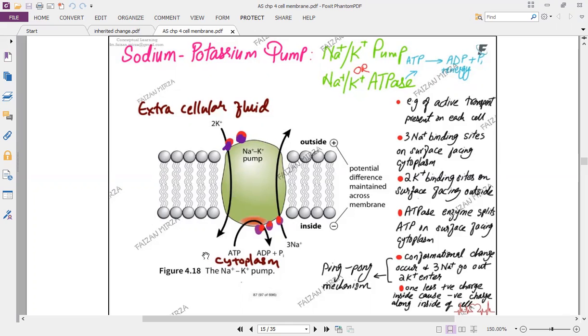And again, this is ping pong mechanism. So once the two potassiums have been moved in, the three sodiums have been moved out, and ATP has been broken down, sodium potassium pump reverts into initial ping state in which again the potassium binding sites are exposed on the outer side and the sodium binding sites are inside. So once again, three sodiums will bind to the inner surface and two potassiums will bind to the outer surface. ATP will be broken down and the same way two potassiums will enter and three sodium ions will leave as conformational change occurs.